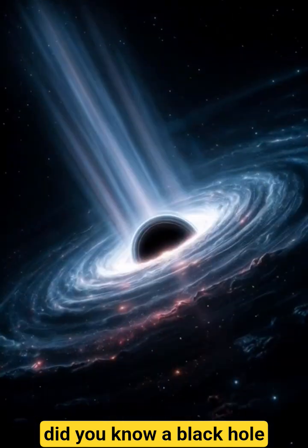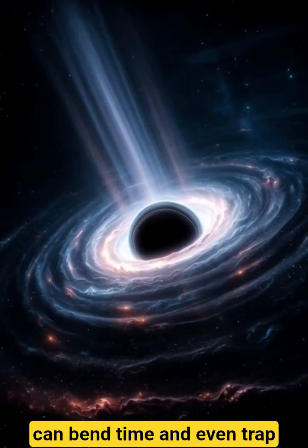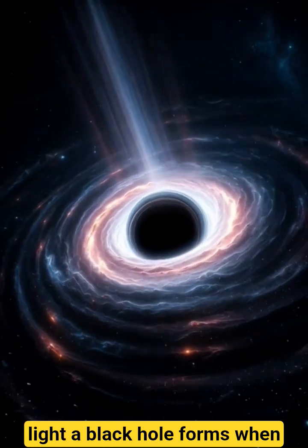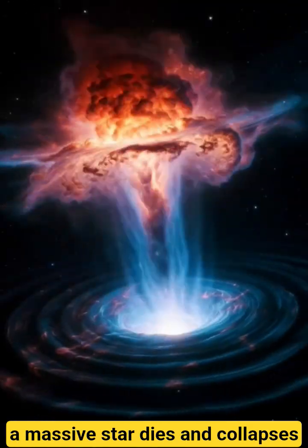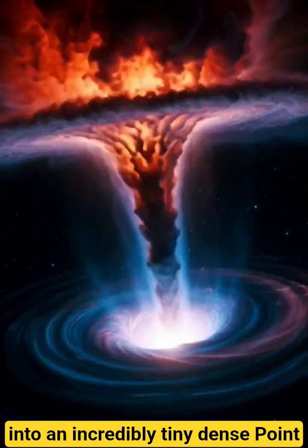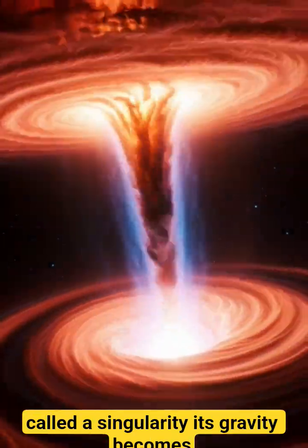Did you know? A black hole can bend time and even trap light. A black hole forms when a massive star dies and collapses into an incredibly tiny, dense point called a singularity.